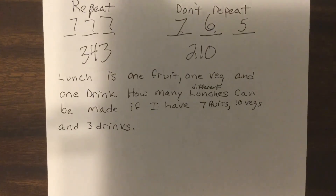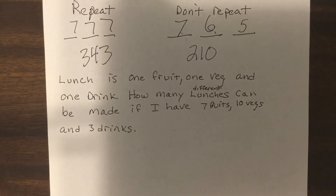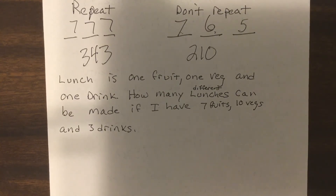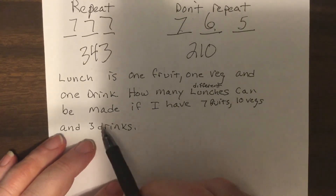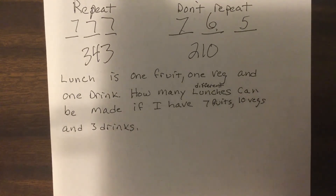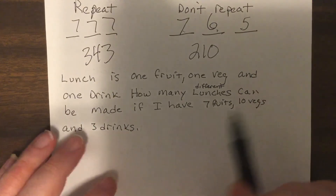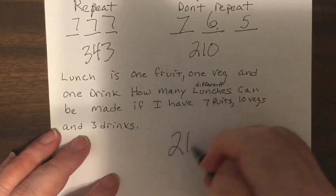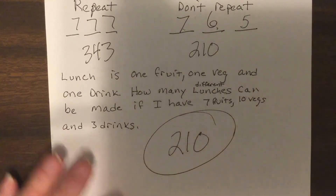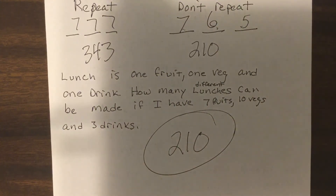Last one: a lunch consists of one fruit, one vegetable, and one drink. How many different lunches can be made if there are 7 fruits, 10 vegetables, and 3 drinks? By the fundamental counting theorem, multiply them together: 7 × 10 × 3 = 210. You could eat the whole school year without having the exact same lunch twice.